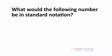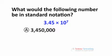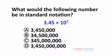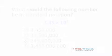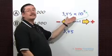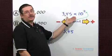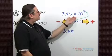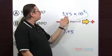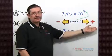What would the following number be in standard notation? This number here is in scientific notation. We want to rewrite it in standard notation. To do so, the first thing I notice is the exponent. It's positive, which means I'm going to move my decimal point seven places to the right.